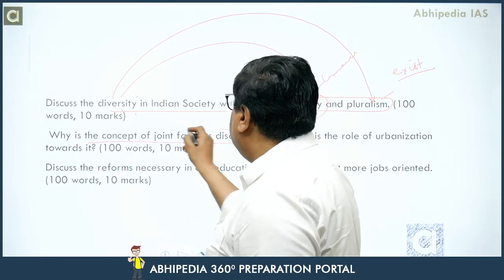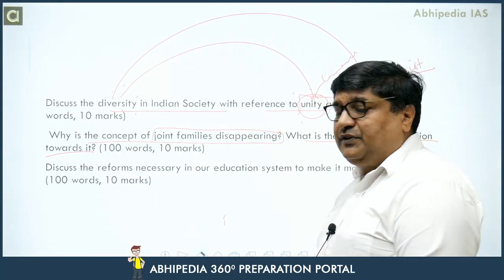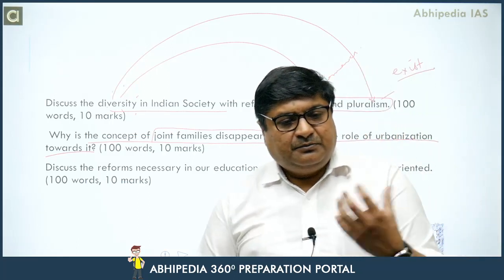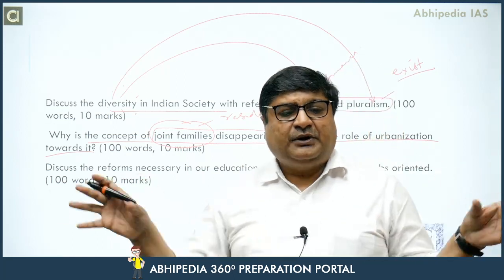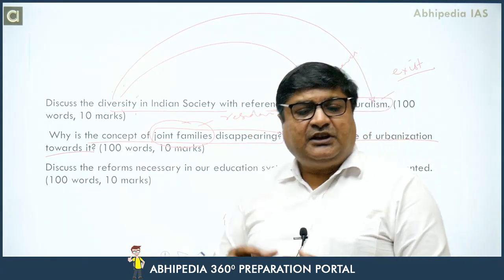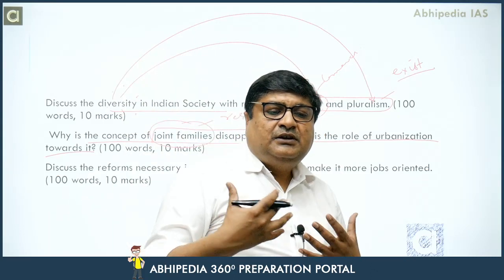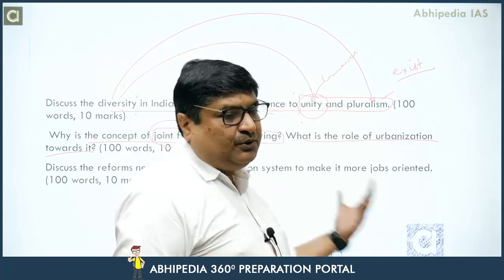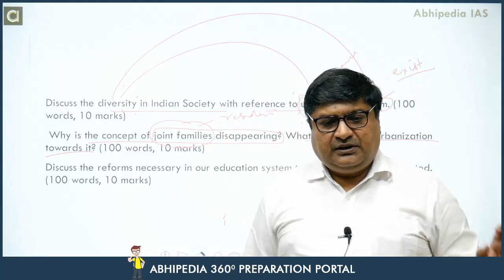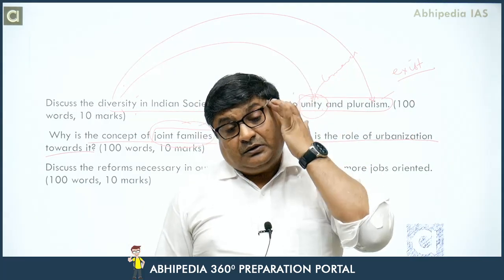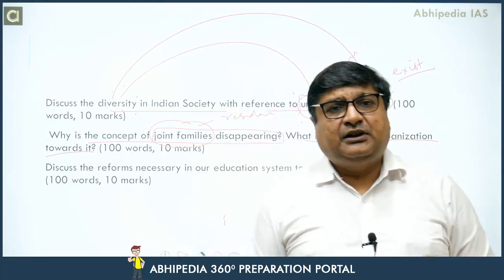Next: why is the concept of joint family disappearing, and what is the role of urbanization? Residentially, people now live in smaller homes due to population pressure and infrastructure constraints. However, joint family ties and relationships are still retained — it is the residential concept that is disappearing. Urbanization is a key driver: the high cost of living in urban areas, housing problems, and other costs make it difficult for a joint family to exist together.